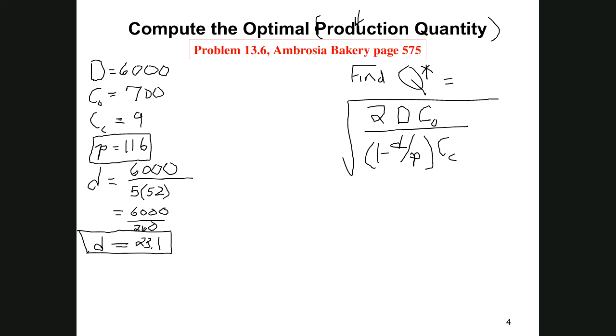Now I like to compute this because it's a term that you're going to use over and over again. I like to go ahead and compute 1 minus D over P because that's a term that you're going to use a lot. In this case, 1 minus D over P is 1 minus 23.1 over 116, which is 1 minus 0.2, which is 0.8. So 80% of the cakes that we make go onto the shelf. Now we have all the terms that we need and we're just going to substitute those in.